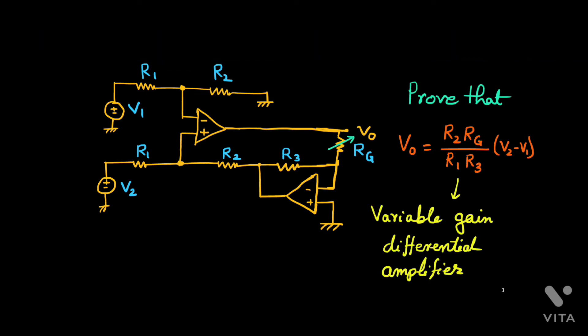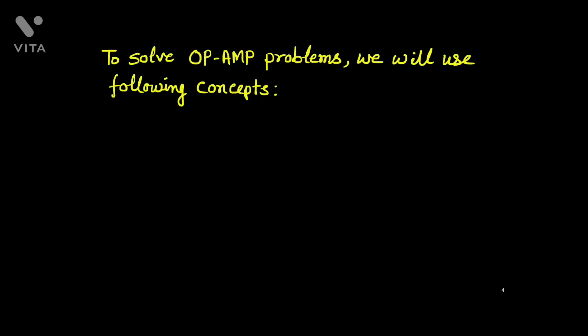This circuit can be called a variable gain differential amplifier — it is the improved version of the differential amplifier circuit. The next video will also discuss one circuit with only a single op-amp, but we'll try to get differential gain with variable gain.